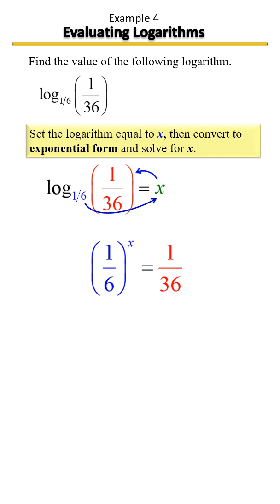So you want to know how many times do you have to multiply 1/6 in order to get 1 over 36, and that will be 2, because 1/6 times 1/6 does equal 1 over 36. So x equals 2.